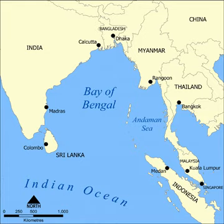The Asian brown cloud, a layer of air pollution covering much of South Asia and the Indian Ocean every year between January and March, hangs over the Bay of Bengal. It is considered to be a combination of vehicle exhaust, smoke from cooking fires, and industrial discharges.